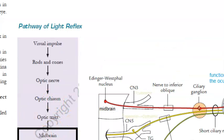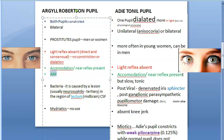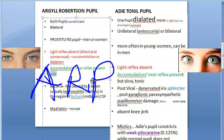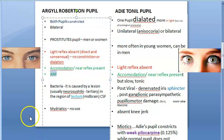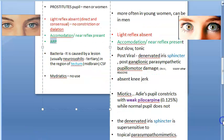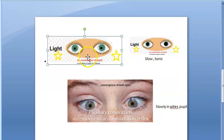The pre-tectal nucleus is damaged in Argyle Robertson pupil, hence no light reflex. ARP stands for: Accommodation Reflexes Present, but Pupillary responses absent — meaning accommodation reflex is present but pupillary reflex to light is absent.